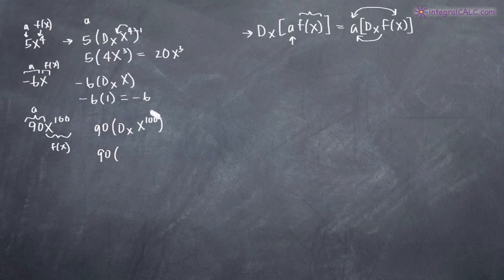Remember to find the derivative of x^100, we'll bring the exponent out in front so we get 100 out in front, leave the variable x and then subtract 1 from the exponent.